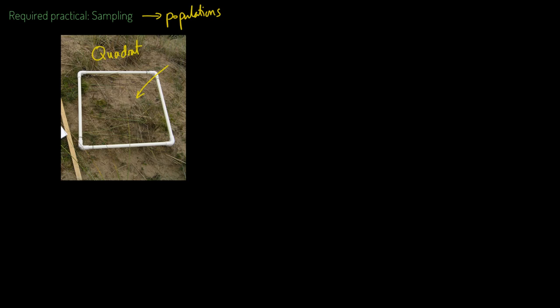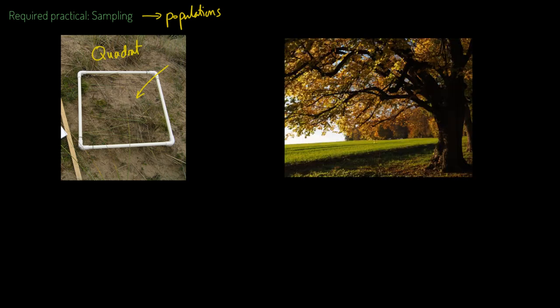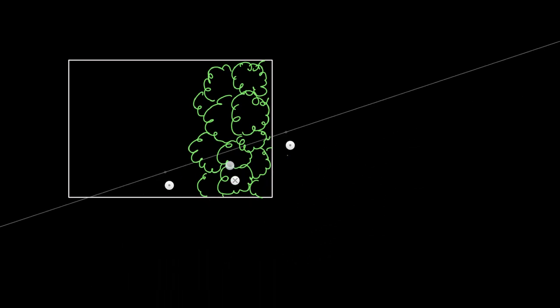Let's say you're looking at a forest and you want to see how grass coverage varies with light intensity. You would use your quadrat to do something called a transect. This is an artist's rendition of a forest and a grassy field from above. A transect is where you go along a straight line with your quadrat — you'd pick a line and do your survey along it.